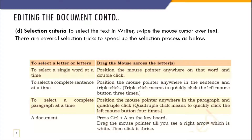Selection criteria in Writer: swipe the mouse cursor over the text. To select a single word, double-click. To select a complete sentence, triple-click. To select a complete paragraph, click four times. To select the whole document, press Ctrl+A. This table is important and may come in your examination.